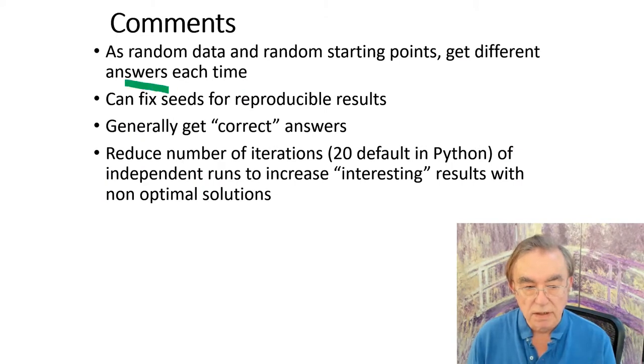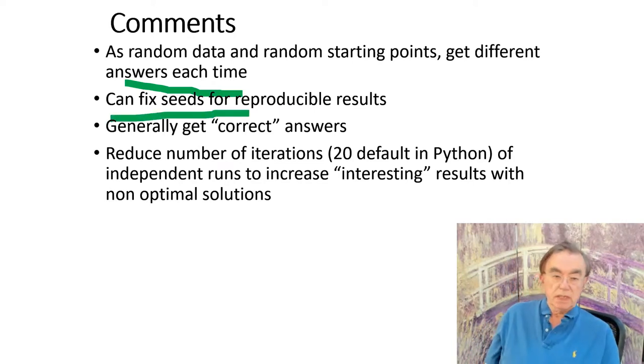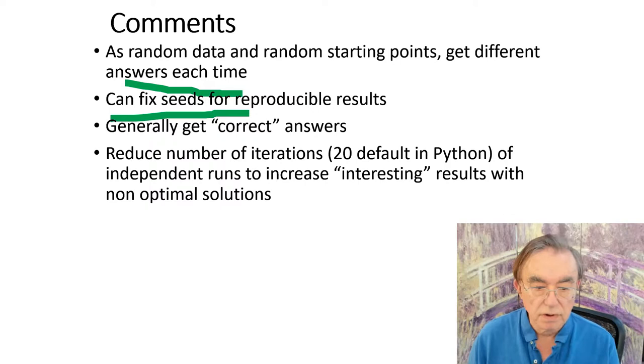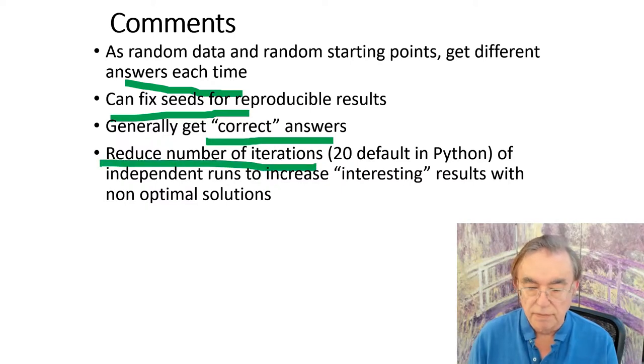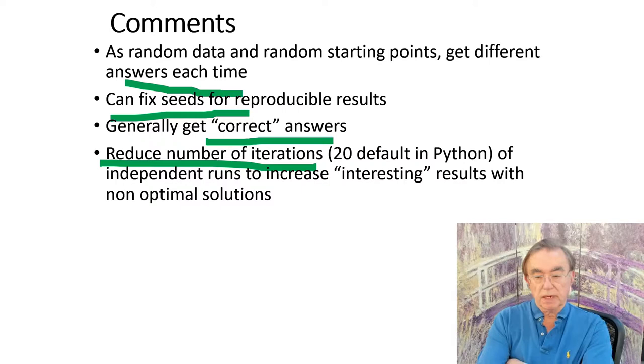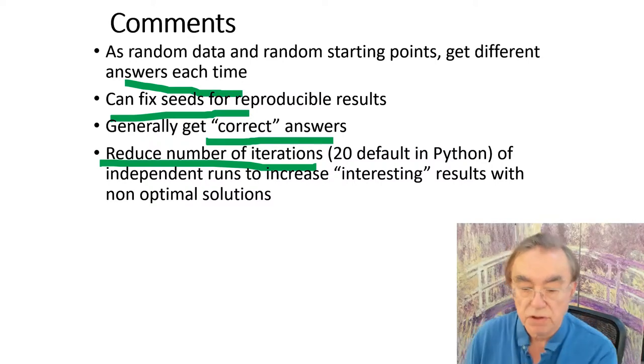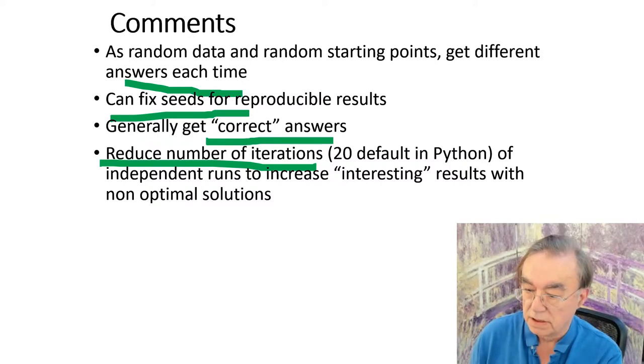We get different answers every time we run this code. If you wish to get reproducible answers, there's ways in random numbers to always make the same set by fixing the seeds. The K-means clustering, if we use four clusters, typically gets the correct answers. But we sometimes get incorrect answers, and we actually enhance that by reducing the number of iterations. Twenty is the default in Python. We reduce that to get more incorrect answers to see what they look like.